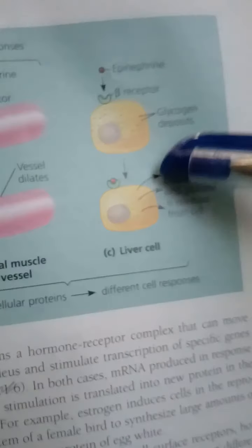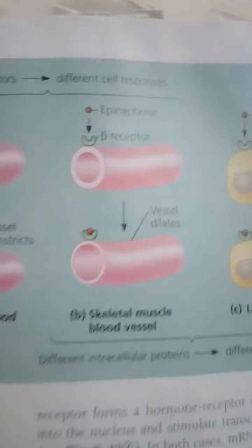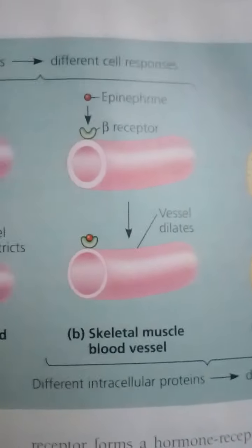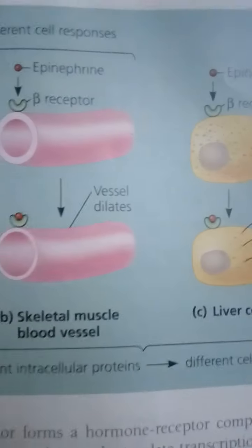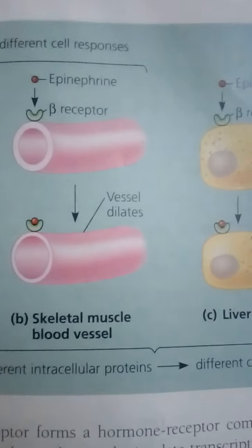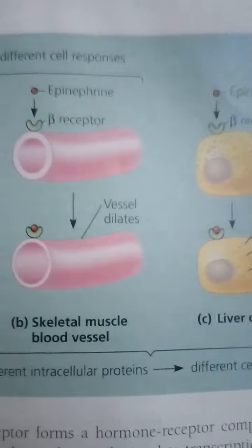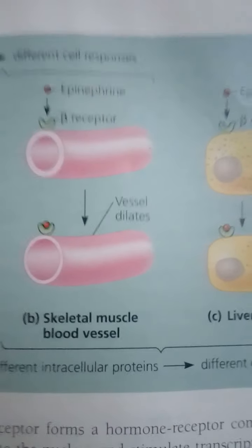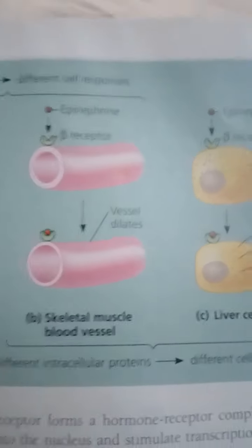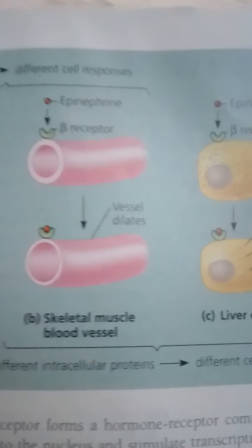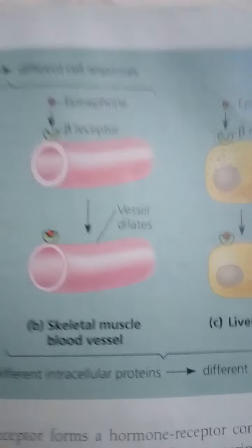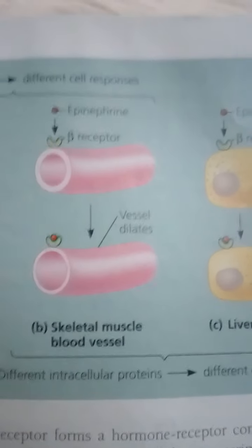For intracellular receptors for lipid-soluble hormones: the first indication that the receptors for some hormones are located inside target cells came from studying the vertebrate hormones estrogen and progesterone. For most mammals including humans, these steroid hormones are necessary for the normal development and function of the female reproductive system. In the early 1960s, researchers demonstrated that estrogen and progesterone accumulate within the nucleus of cells in the reproductive tract of female rats.